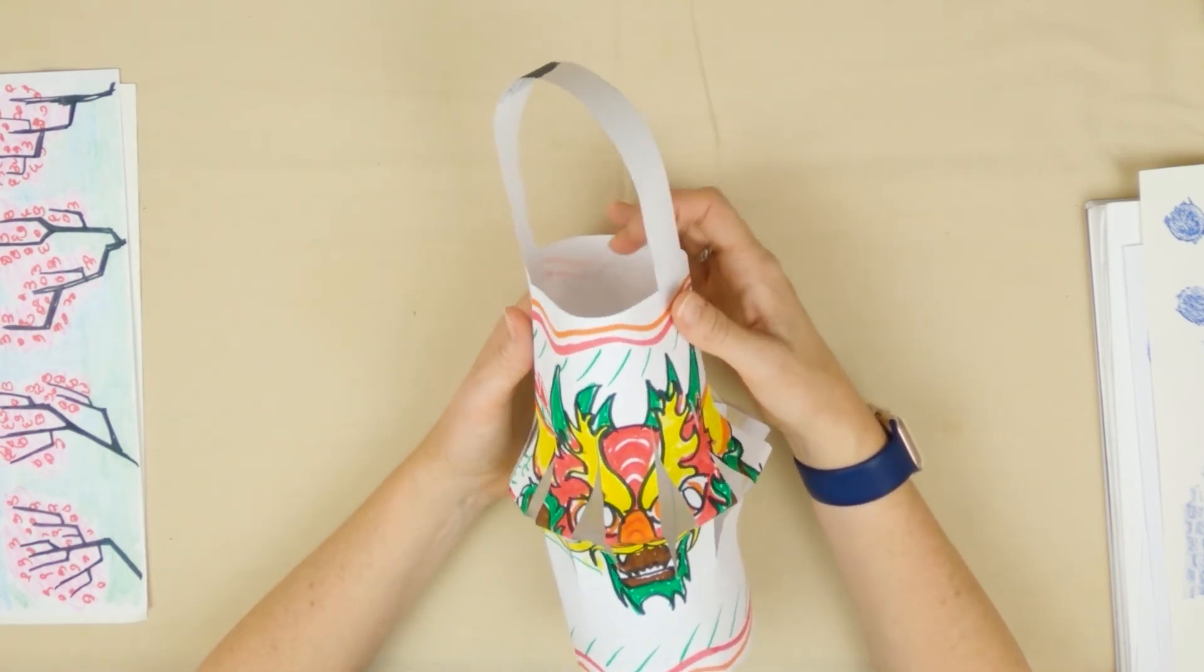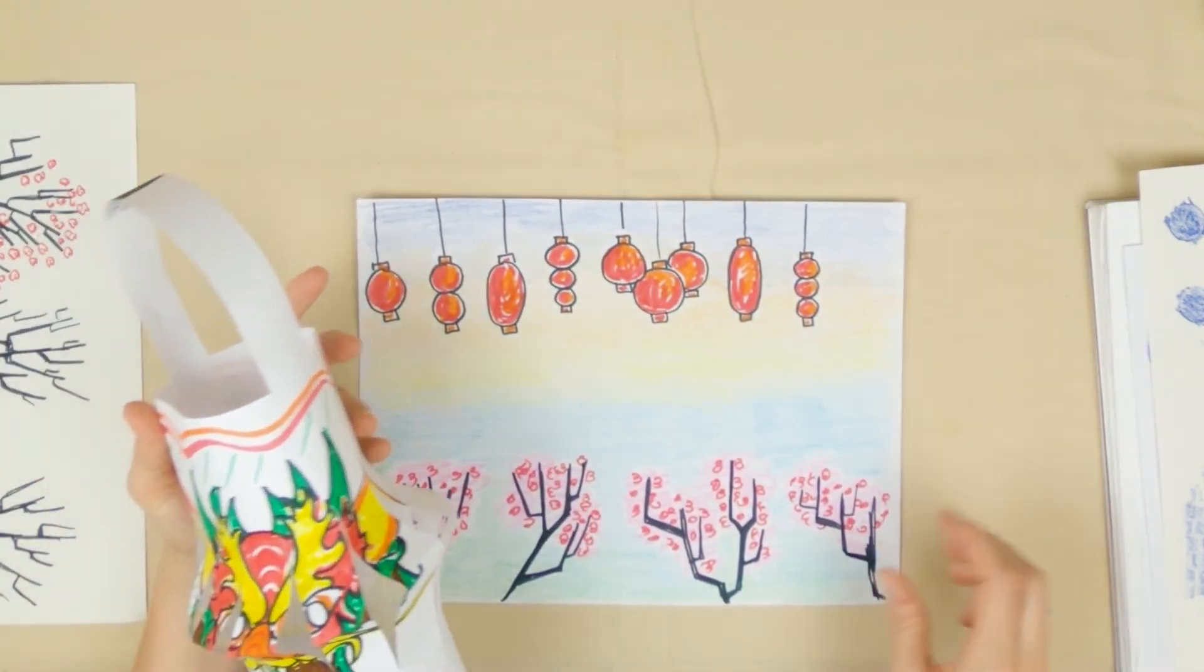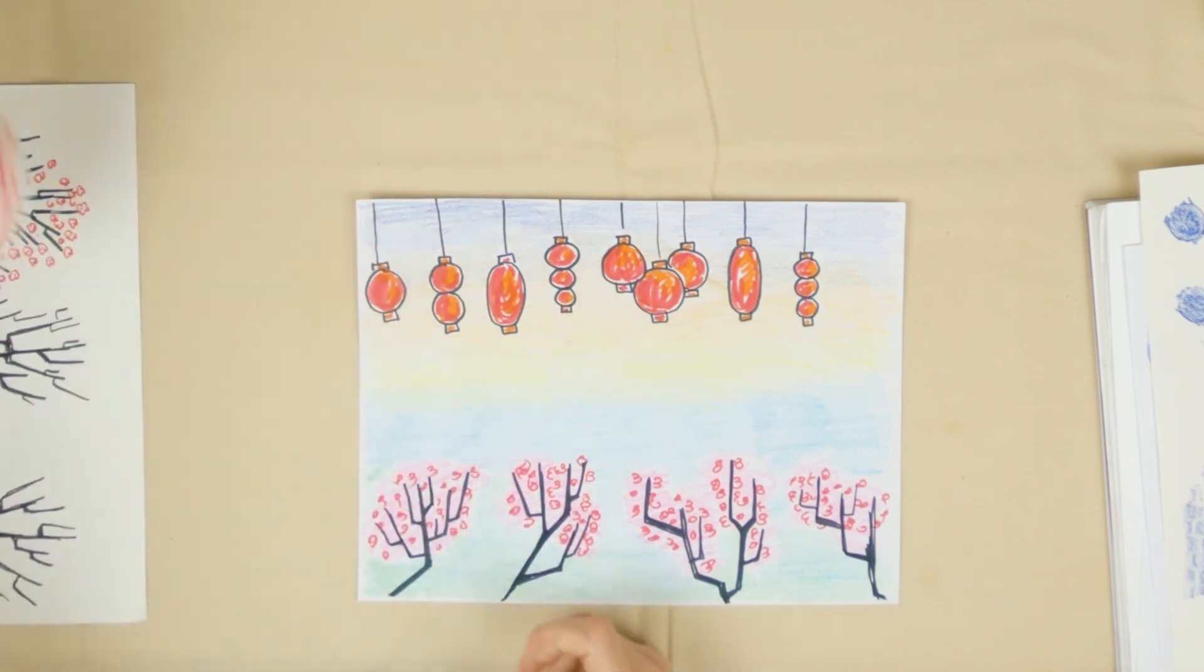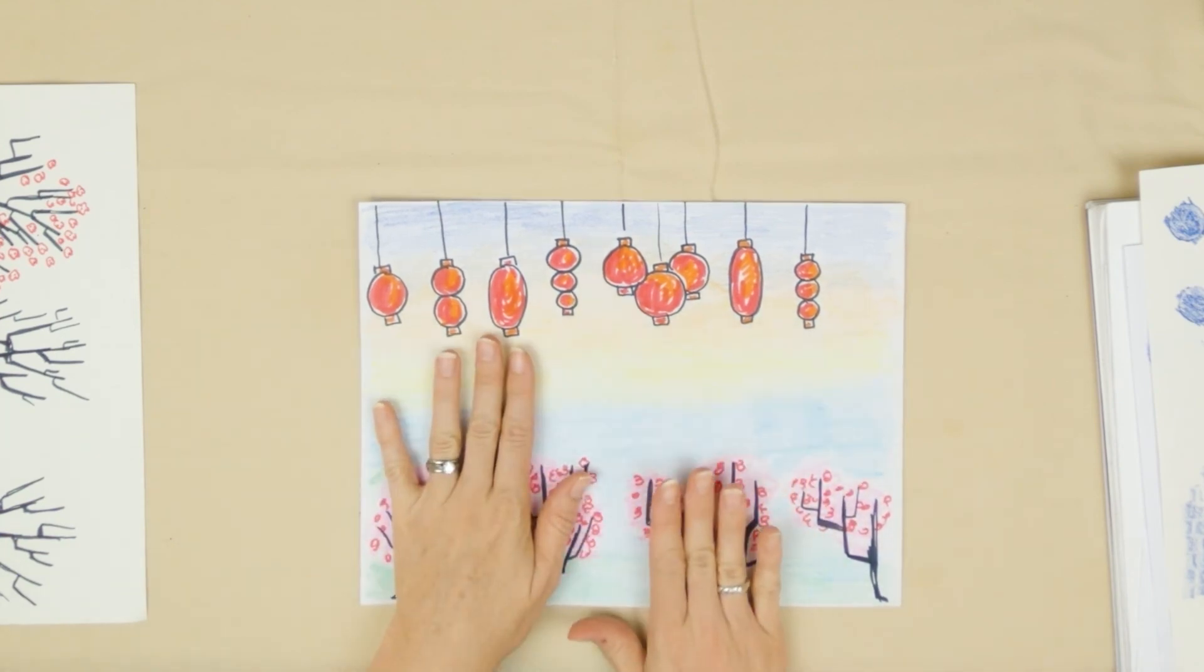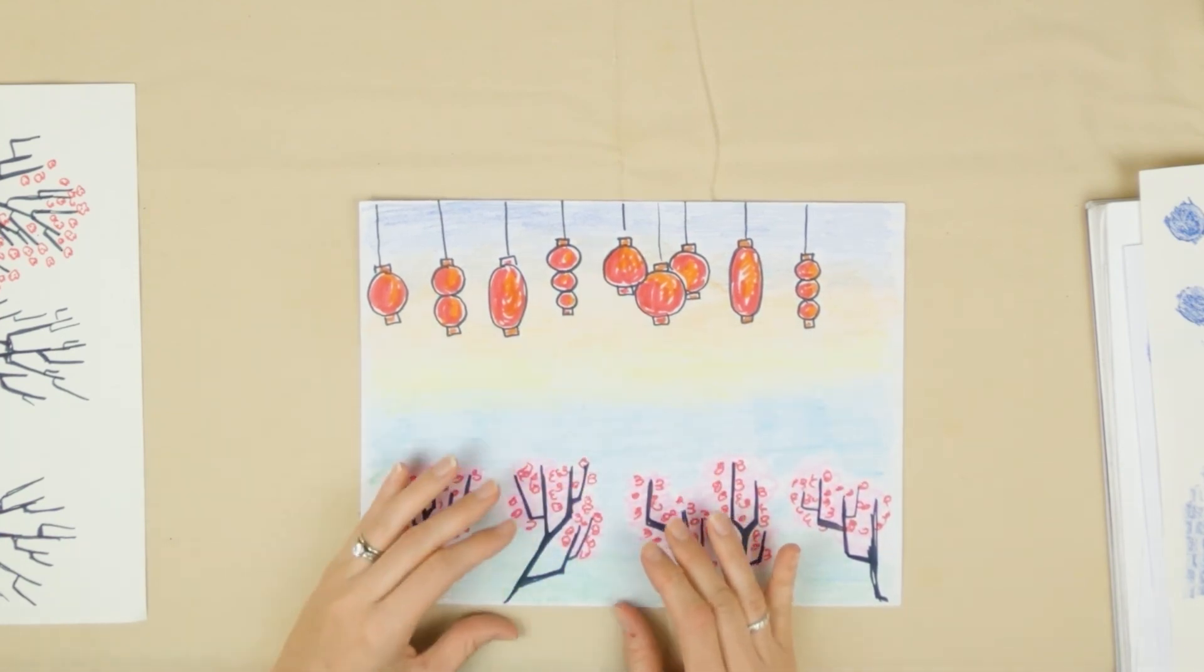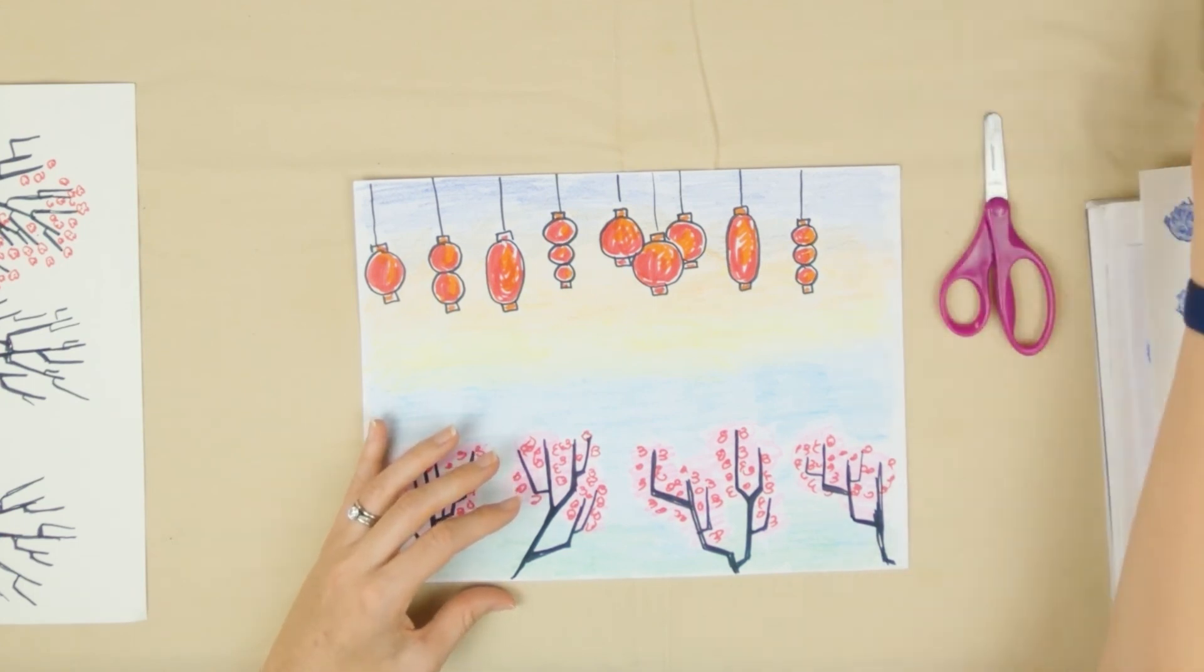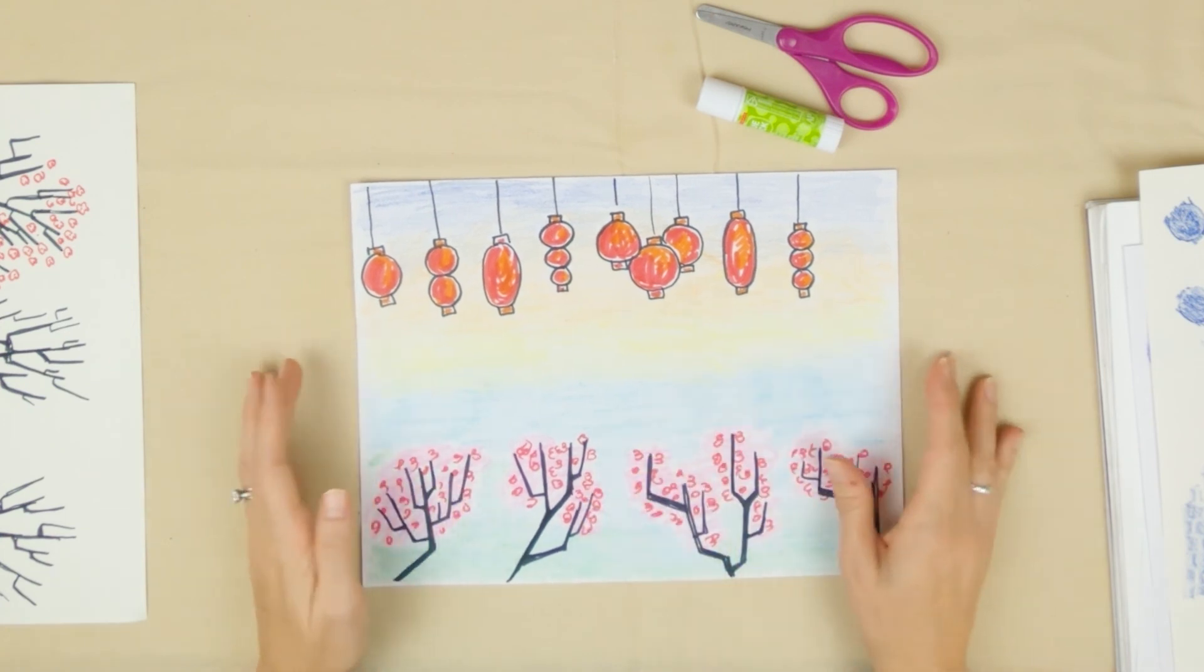Go ahead and get that sheet out that you were working on. Look it over, make sure it looks finished to you. If it's not finished, pause the video and finish it. If it is finished, you're going to follow my instructions. You'll need scissors and a glue stick to complete this part.